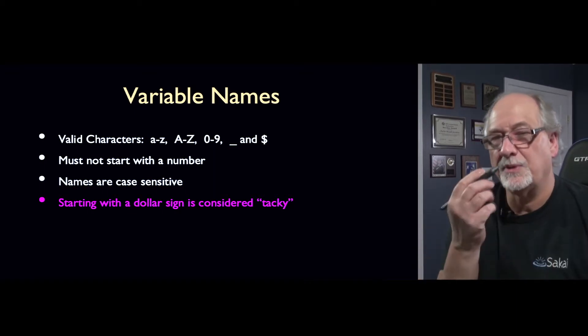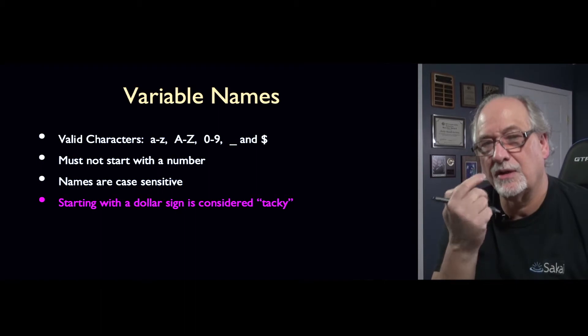It turns out that because JavaScript sort of saw what PHP and Perl looked like, they allowed dollar signs at the beginning variables because PHP and Perl are the places where dollar signs are allowed. But when people started writing JavaScript, they wanted to be more like Java. Java doesn't allow dollar signs in variables. And so there was kind of this unwritten rule of just don't start a variable with dollar sign, even though JavaScript allows it. Just kind of don't do it. It's not cool.